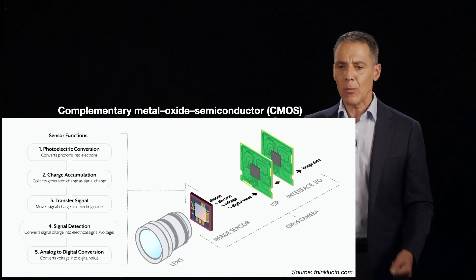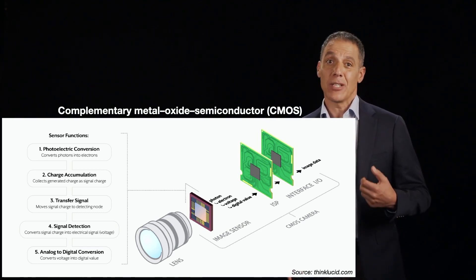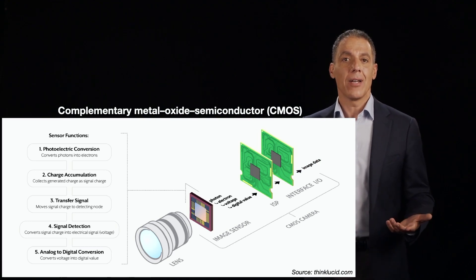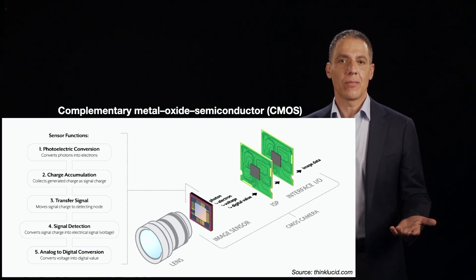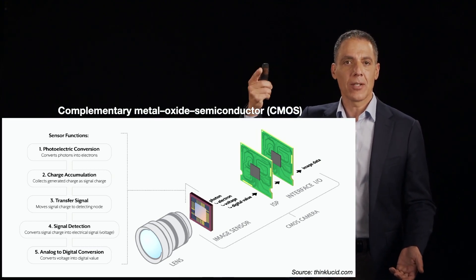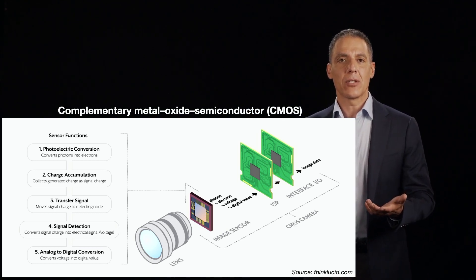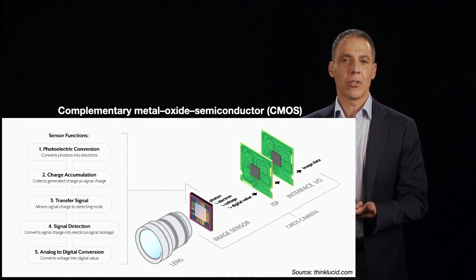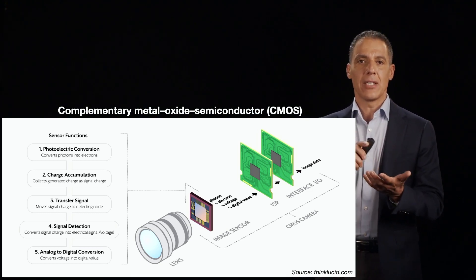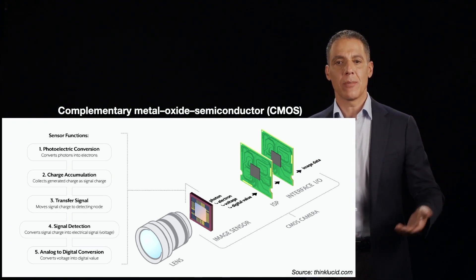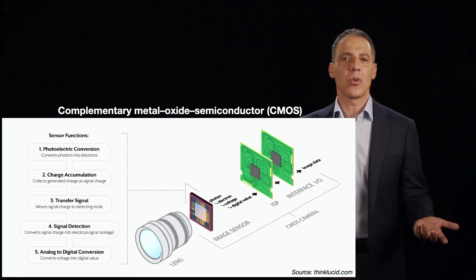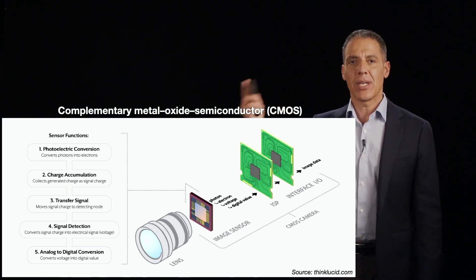At its core, what a CMOS sensor does, what a CCD sensor does, frankly what film does and what the retina at the back of the eye does, is it converts light into a different signal. Here it converts it into a visual signal to transmit to the back of your brain. In a 35-millimeter negative, it uses a photo process to convert light into something that can be recorded. And here we convert it into a digital signal — think of it as an analog to digital converter: we take photons and bring pixels out.